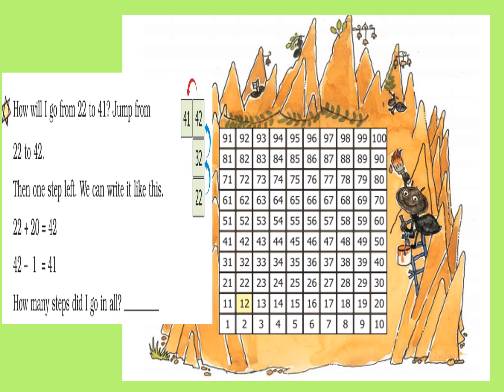How will we go from 22 to 41? Look at the number 22. If we jump one row above we reach 32. With one more jump we reach 42. But we have to reach 41, so we take one step towards the left to reach 41. We write it as: 22 plus 20 (jumping 2 rows above) equals 42, then 42 minus 1 gives us 41. In all, we moved 19 steps.